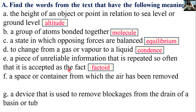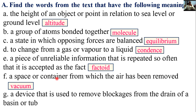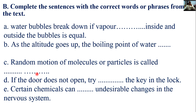A space or container from which the air has been removed — that is vacuum. A device that is used to remove blockages from the drain of a basin or tube — that is a plunger. Now, Section B: complete the sentences with the correct words or phrases from the text.